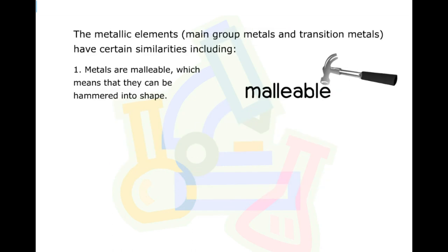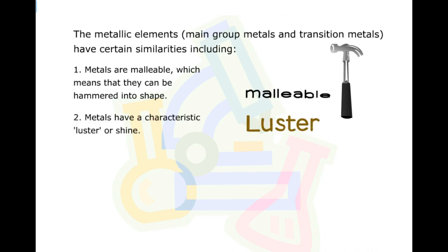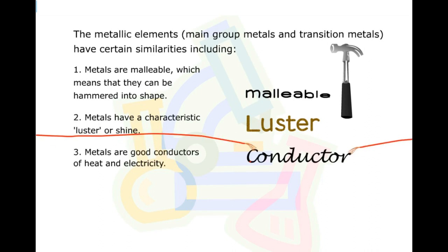The metallic elements, main group metals and transition metals, have certain similarities including: metals are malleable, which means that they can be hammered into shape. Metals have a characteristic luster or shine. Metals are good conductors of heat and electricity.